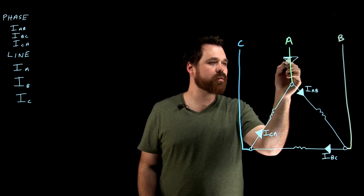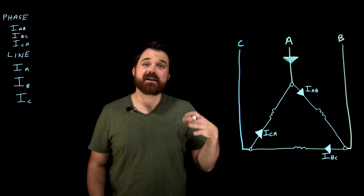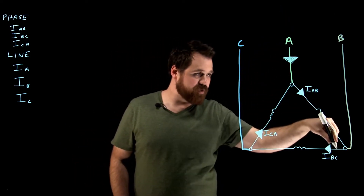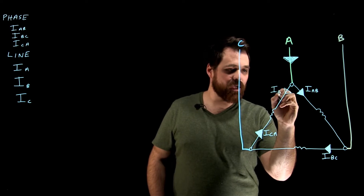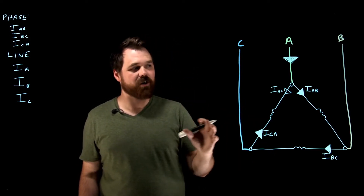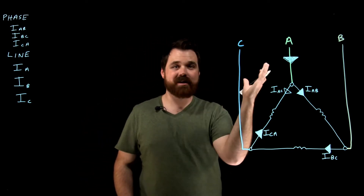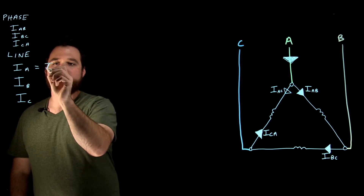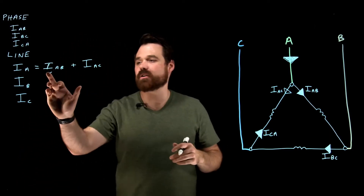As current flows on line A into node A, we can apply Kirchhoff's current law, which tells us that all current flowing into a node equals the current flowing out of that node. So I_A flowing into node A has I_AB flowing out, and also I_AC, which is the inverse of I_CA — it's going to be 180 degrees apart. So I_A equals I_AB plus I_AC, and that'll be completed on a phasor diagram.